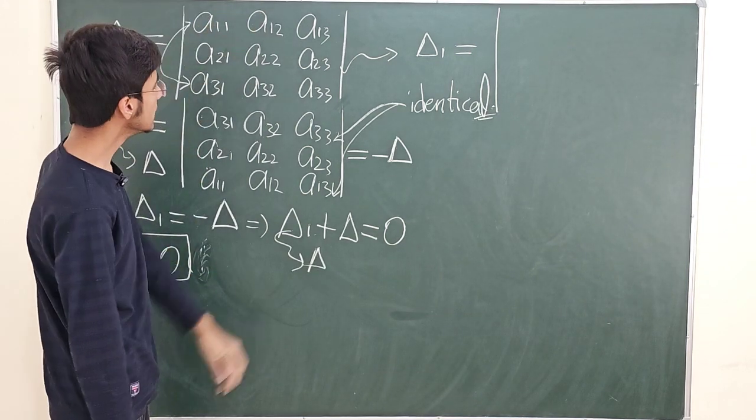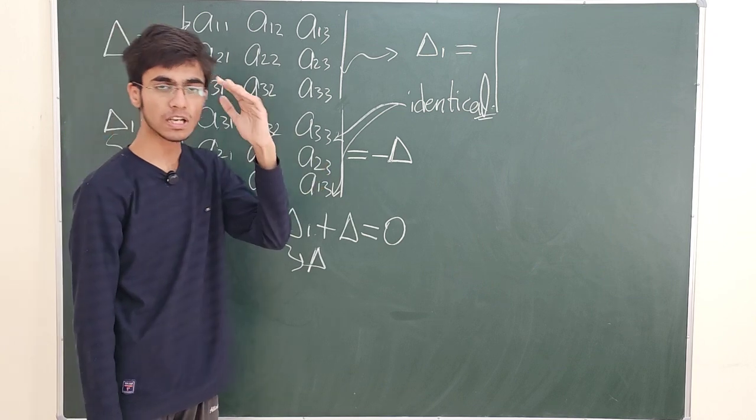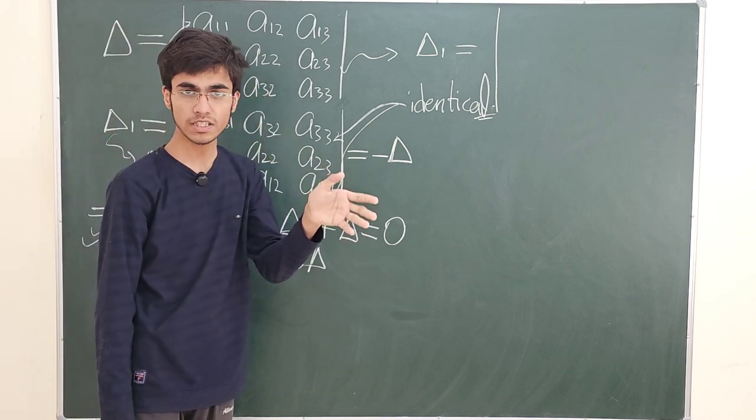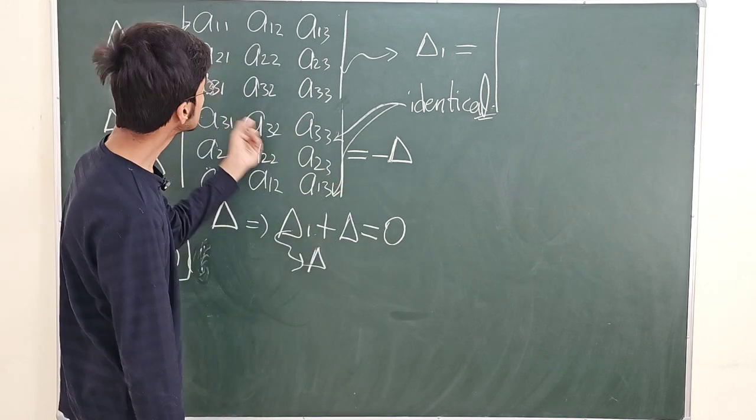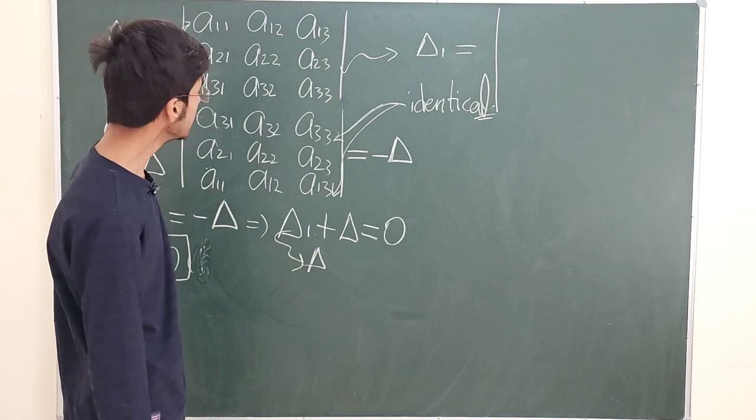For instance, if we multiply all elements of the first row by scalar k, then expanding by Laplace expansion along the first row: